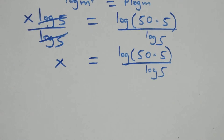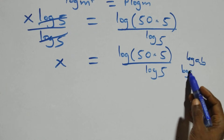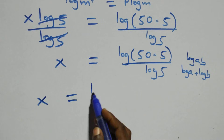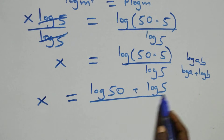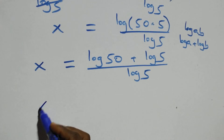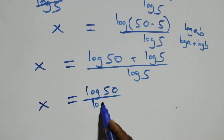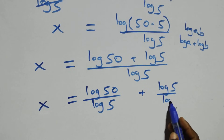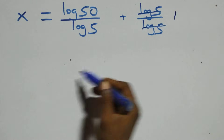This becomes x equals log(50 times 5) over log 5, which we expand using the product rule of logs as x equals log 50 plus log 5, all over log 5. We separate this into two fractions: x equals log 50 over log 5, plus log 5 over log 5. The log 5 terms cancel.